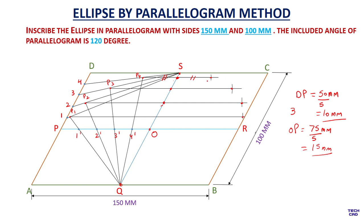These are also points for my ellipse profile. In the same way, take lines from these new points downward and extend further. You can give namings to these points: P5, P6, P7, and P8.